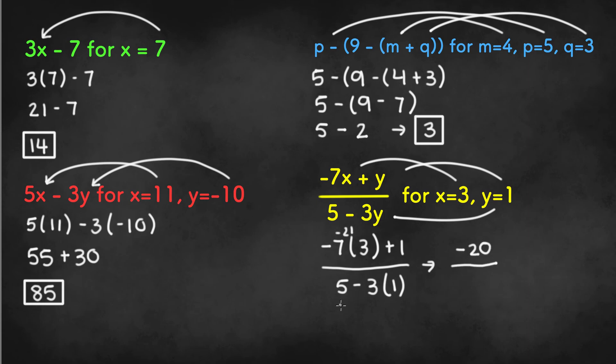On the denominator, we have negative 3 times 1, which is negative 3, and then 5 minus 3, which is 2. Finally, negative 20 divided by 2 is negative 10, and that's the final answer.